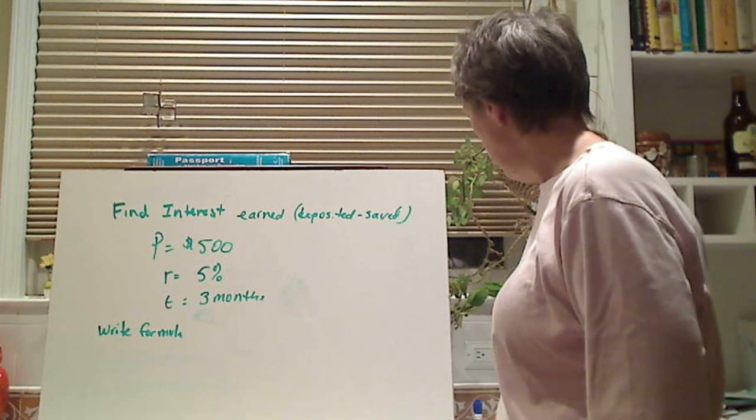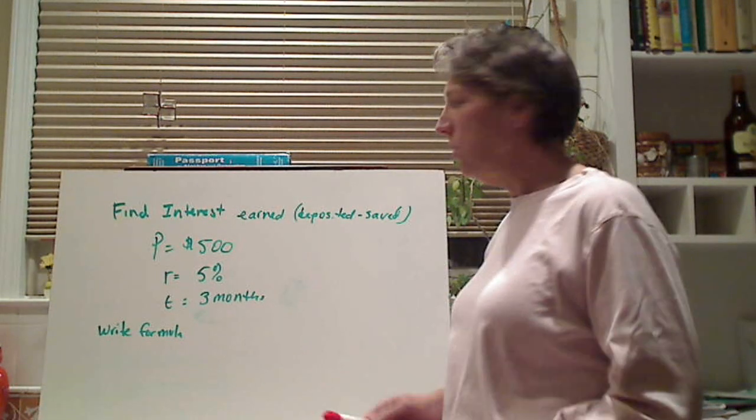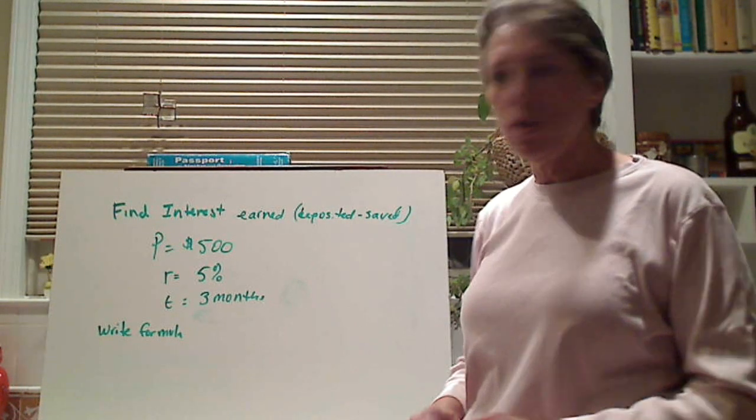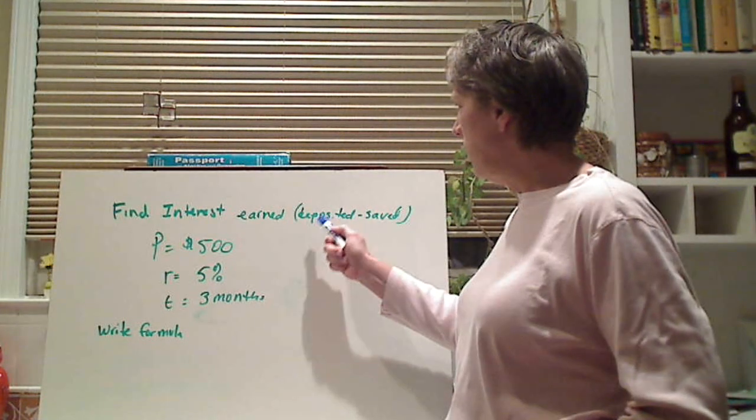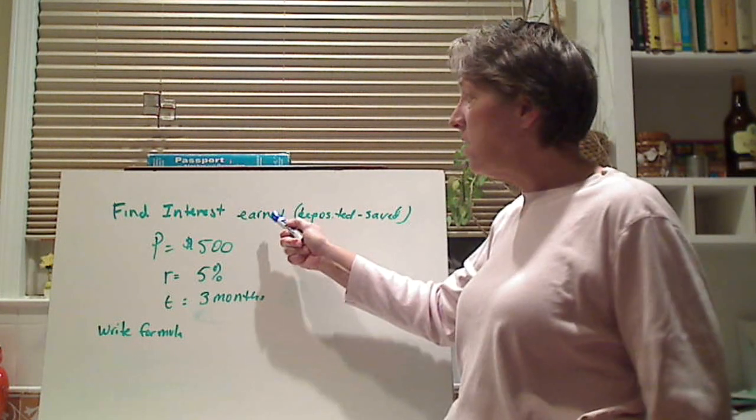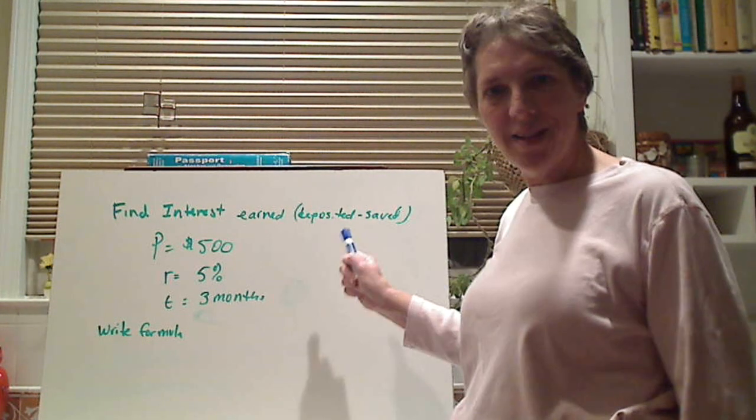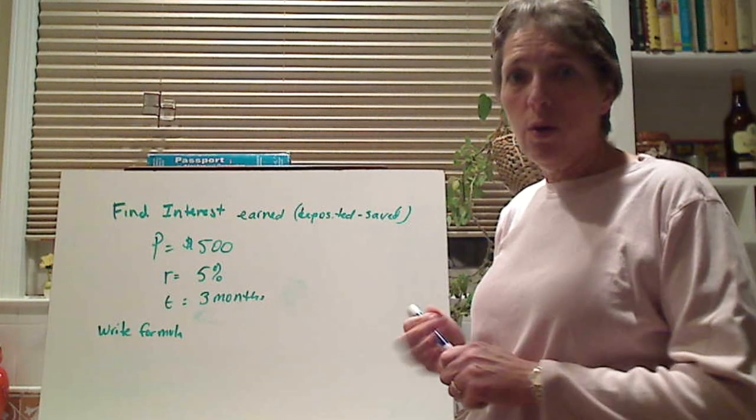Now we're going to do this one. For instance, find interest earned. All this wants to know is the interest earned. So this is what we're talking about. If it says earned, that means it's a deposit and you're saving money. Okay.